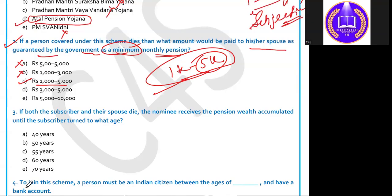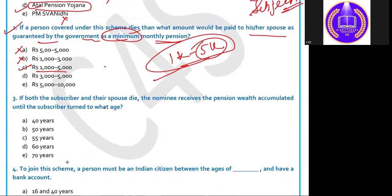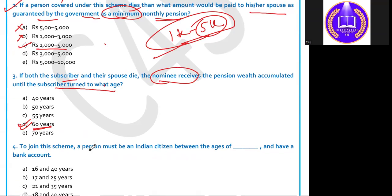If both the subscriber and their spouse die, the nominee receives the pension corpus accumulated until the subscriber would have turned 60 years of age. So the nominee continues to receive the pension corpus up to what would have been the subscriber's 60th year.